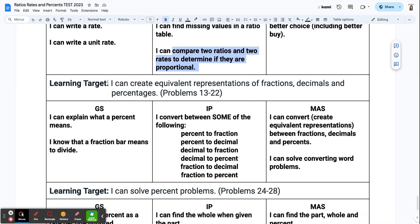Learning target for the next section, I can create equivalent representations of fractions, decimals, and percents. This is the whole section where you're asked to convert between a fraction, a decimal, and a percent. So if you notice, getting started is just like, hey, do you know what a percent is? Do you know that when you see a fraction bar, it actually means to divide? Are you applying that skill? And then your in progress means like, hey, you're pretty good at some of these. You can convert from one thing to another, but maybe not all of them. Your mastery is you can convert everything proficiently. And if I throw out in a word problem, you can also solve that.